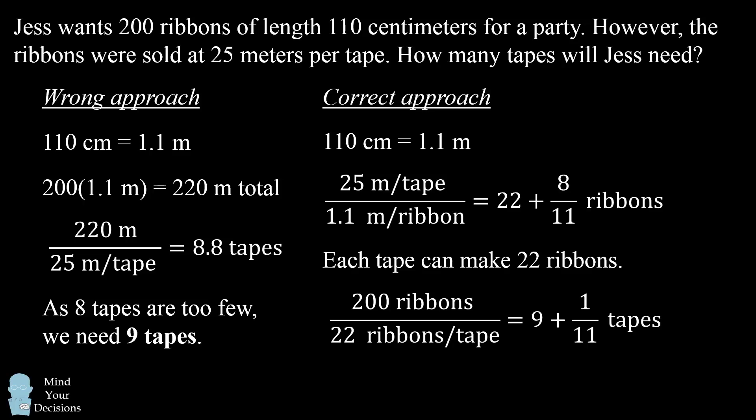From there, we know that we need 200 total ribbons, so we divide that by the 22 ribbons per tape, to get that we'll need 9 plus 1 over 11 tapes.